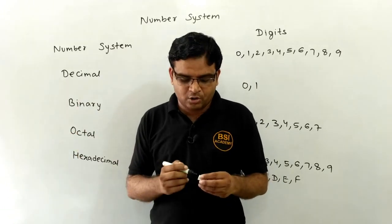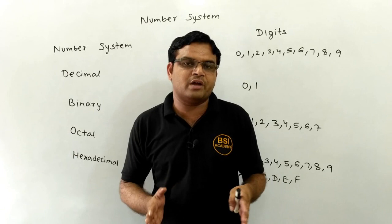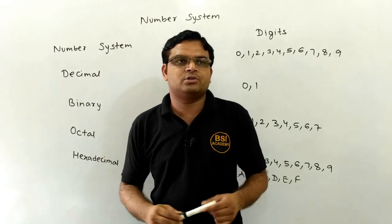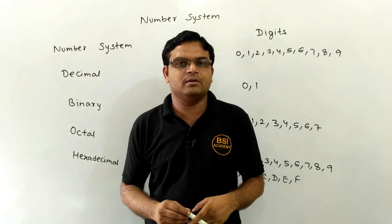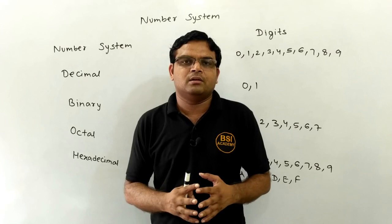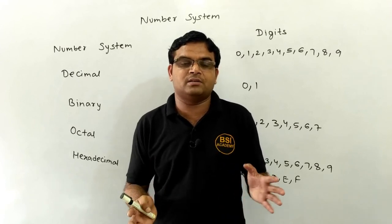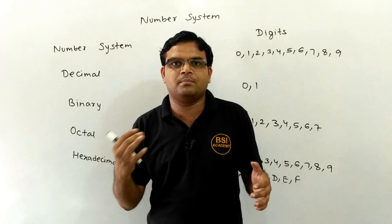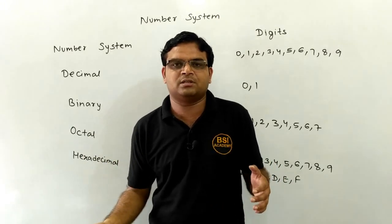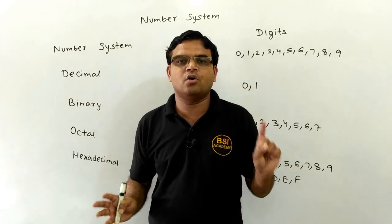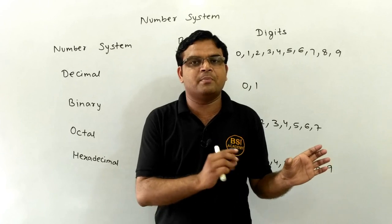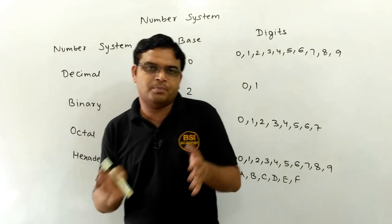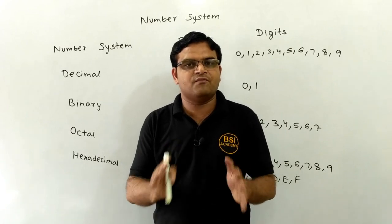So these are some of the number systems which we have to study for our exam. This is just our introduction. Now for the exam point of view, we have to understand how we can convert one number system into another. One question was asked in 2017 in January, where the question stated that any number — suppose 49 — can be represented using the decimal, binary, octal, or hexadecimal number system. The way of representation may be different, but its value always remains the same.